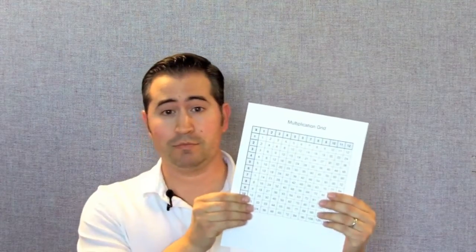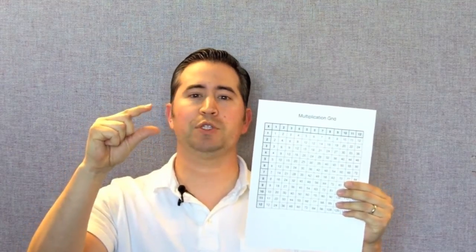A lot of teachers use a multiplication grid to help their students learn and work with their multiplication facts, but what you may not know is that this chart, when combined with these two fingers, can help a student with reducing a fraction. Let's check it out.